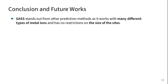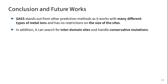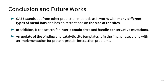GAS stands out from other prediction methods as it works with many different types of metal ions and has no restrictions on the size of the sites. In addition, it can search for interdomain sites and handle conservative mutations. An update of binding and catalytic site templates is in the final phase, along with an implementation for protein-protein interaction problems.